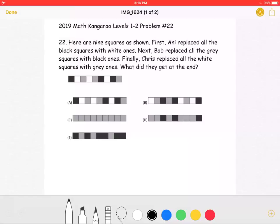First, Annie replaced all the black squares with white ones. Next, Bob replaced all the gray squares with black ones. Finally, Chris replaced all the white squares with gray ones. What did they get at the end?